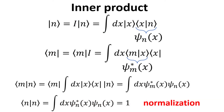Having written the n-ket in the position representation, we can also write a similar expression for the m-bra, but with the wave function in its complex conjugate. The complex conjugation is because in the first case we have the ket n projected onto the basis, while in the second case we have the basis projected onto the bra m. The inner product of the m-ket with n-ket can then also be expressed as the integral of the product of the two wave functions. The inner product of state n with itself is one, which is known as the normalization condition.